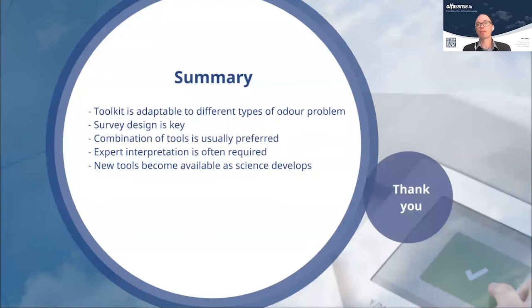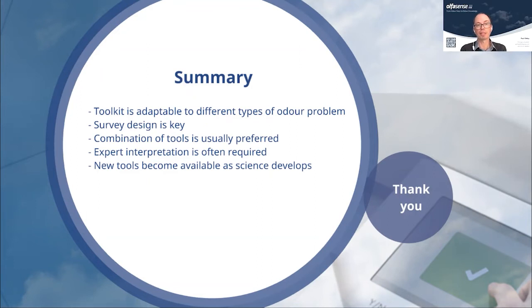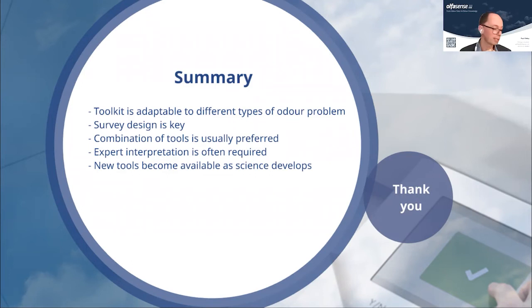In summary, the toolkit is there and is adaptable to different types of odour problem. The key is to ensure that the design of the survey or the tools applied are designed appropriately to meet the objective and target of the study. A combination of tools is usually the preferred method, and expert interpretation is often required for more problematic situations. New tools are becoming available as the science of odour assessment and measurement develops, and more new tools will likely come into use in the coming years.